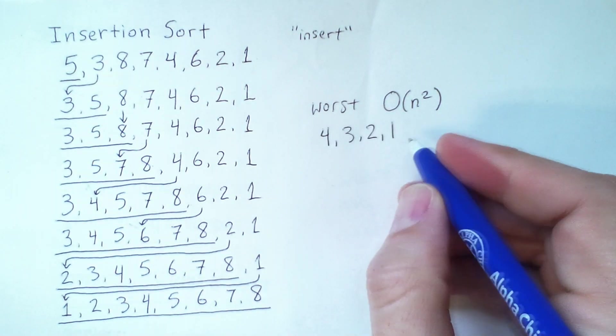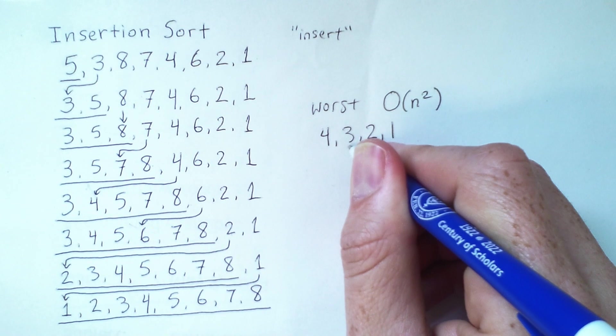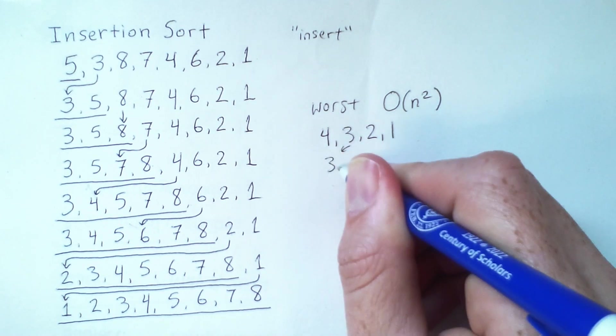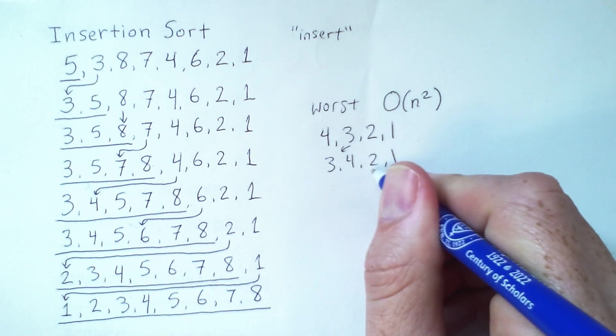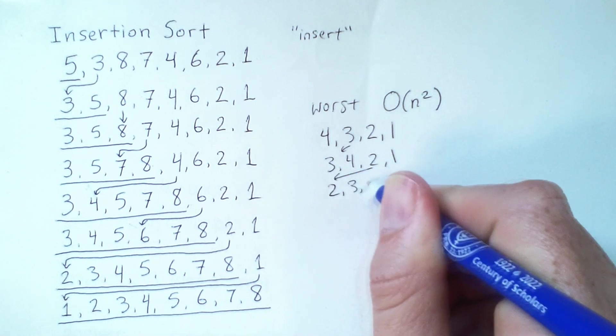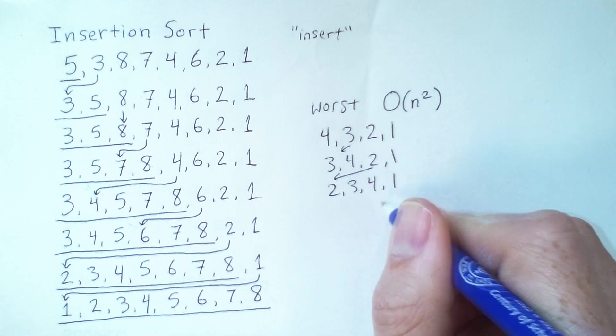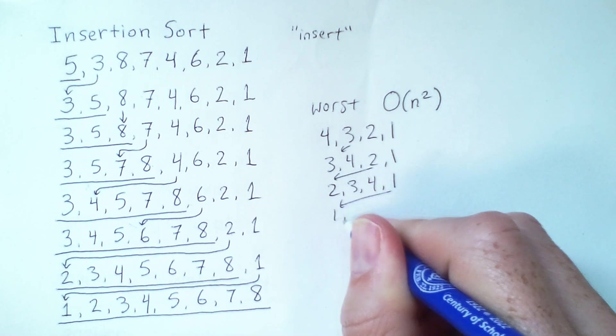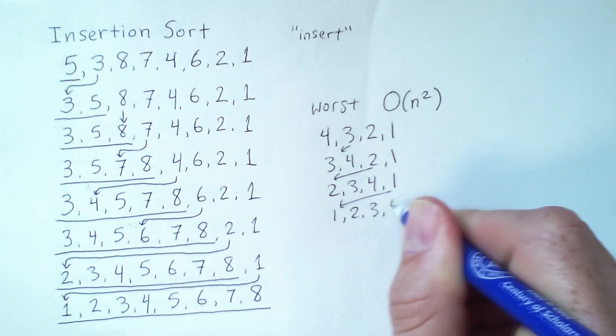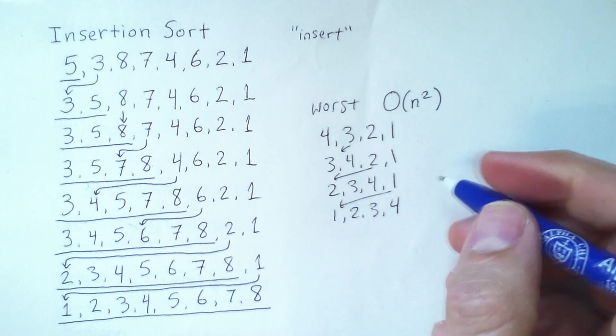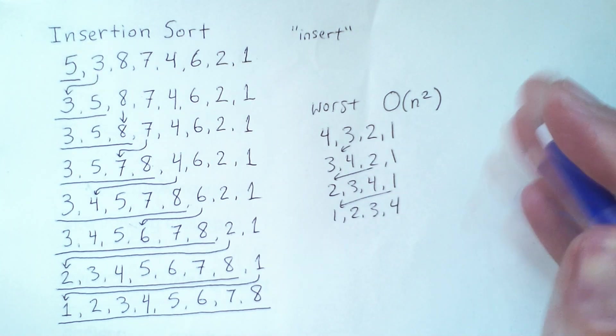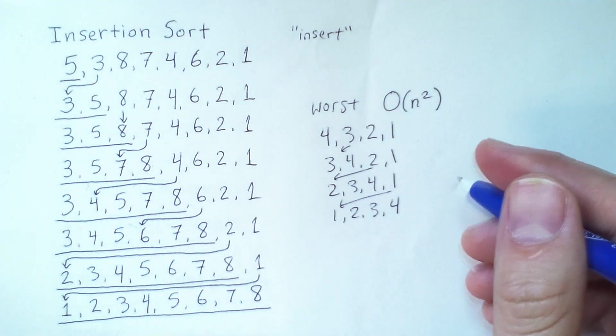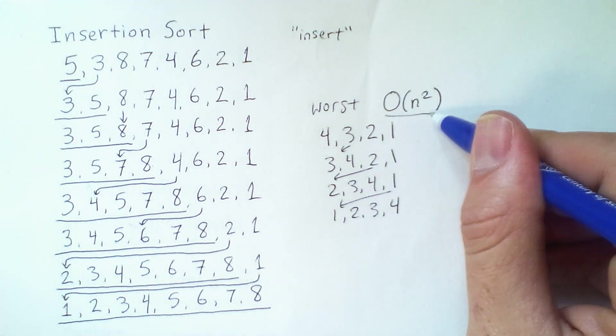So if I did insertion sort here, I would move 3 back. And then the 2 back. And then the 1 back. And so this ends up being a typical 1 plus 2 plus 3, etc., all the way up to n kind of amount of work. And that is n squared.